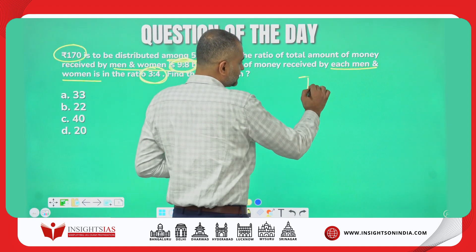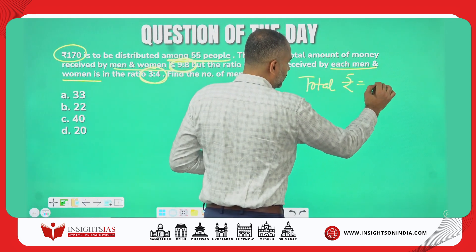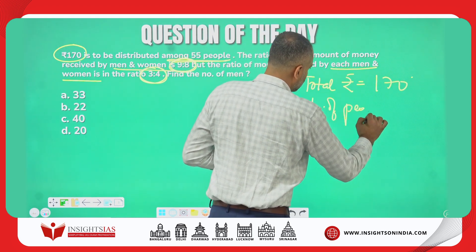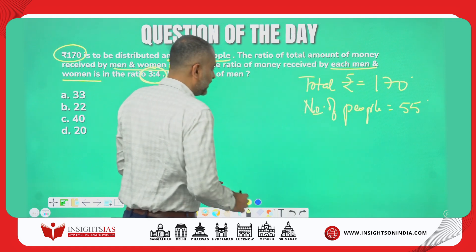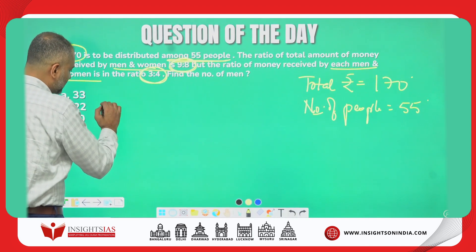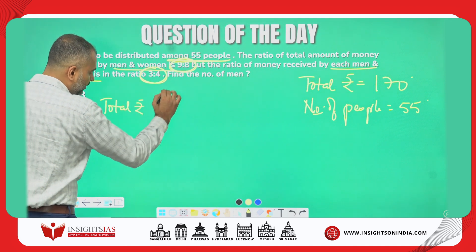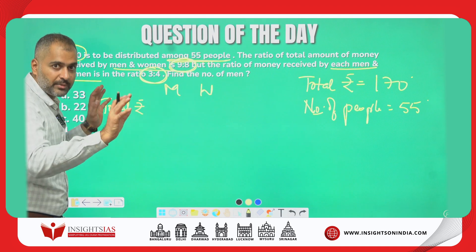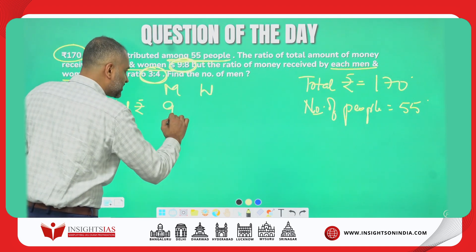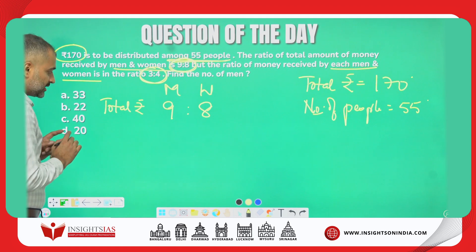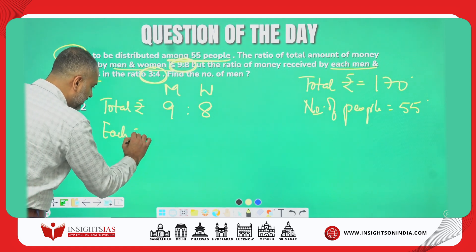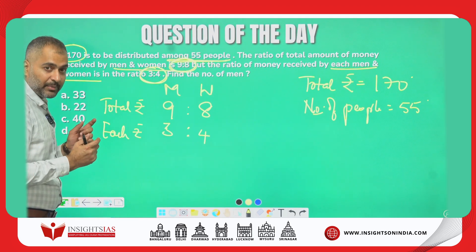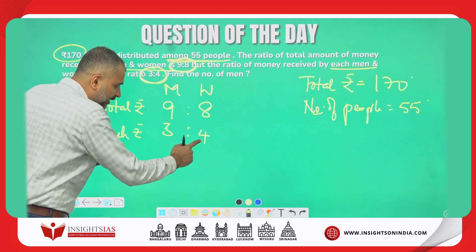The total amount is equal to rupees 170. Number of people total is equal to 55. The total money received by all the men and all the women — when I divide 170 rupees among all the men and women, the men received totally 9 parts and the women received 8 parts. Similarly, each man and woman are receiving in the ratio 3 is to 4 — that is the money received by each man compared to each woman.